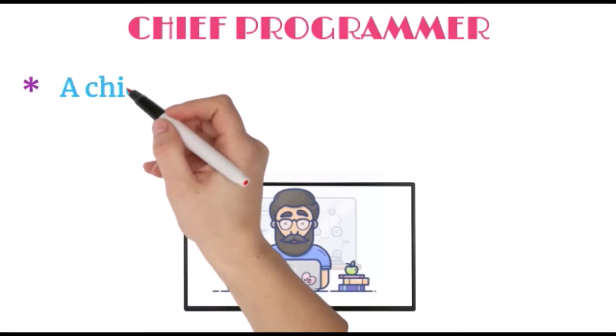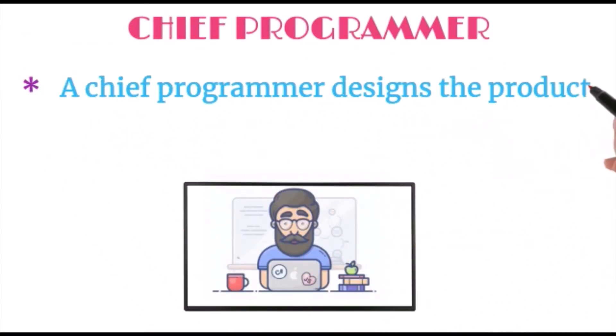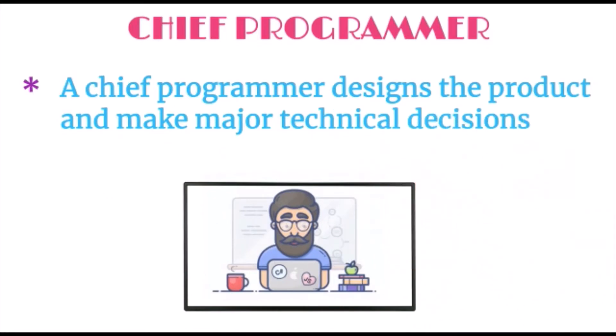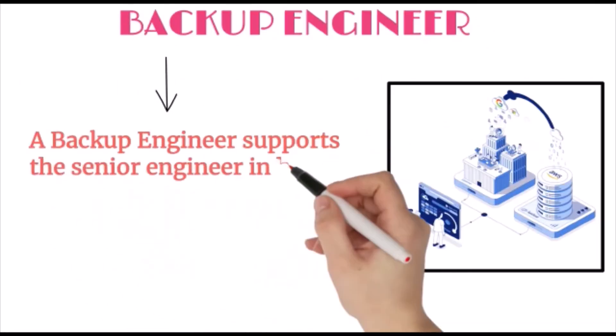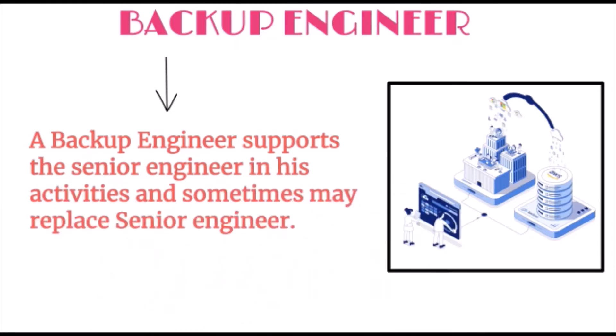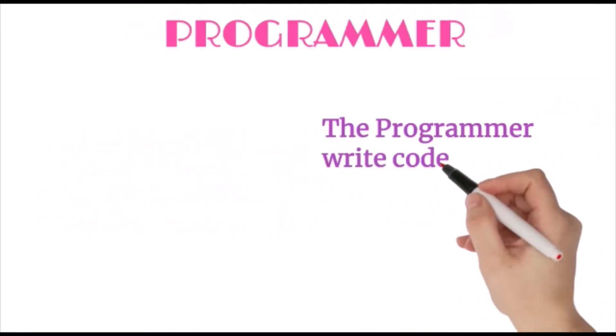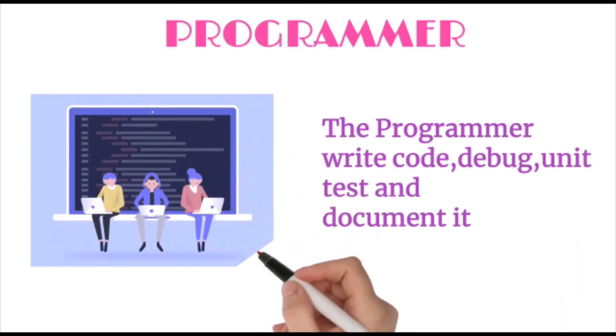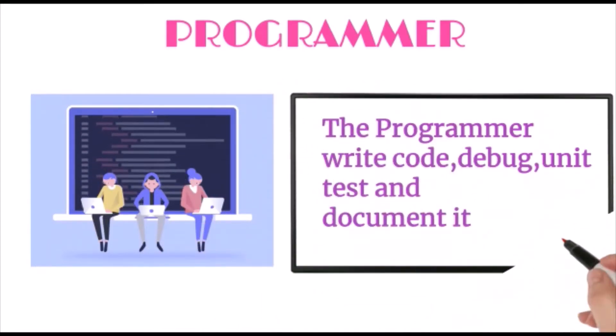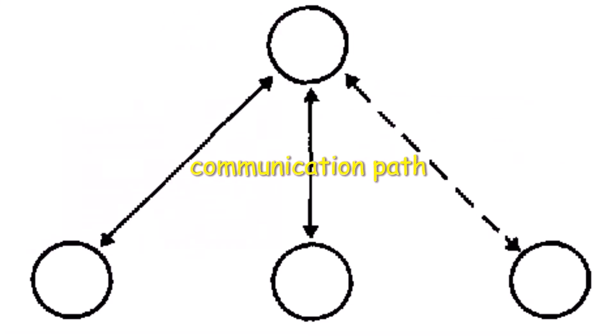A chief programmer designs the product and makes major technical decisions. A backup engineer supports the senior engineer in activities and sometimes may replace the senior engineer. The programmers write code, debug, unit test, and document it. Only vertical communication is allowed here.